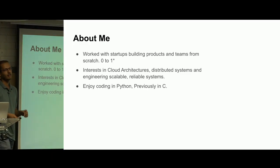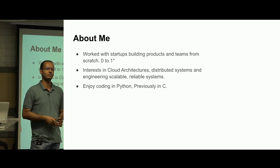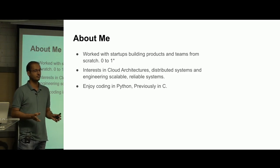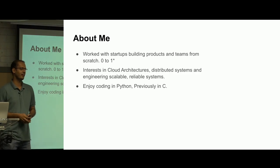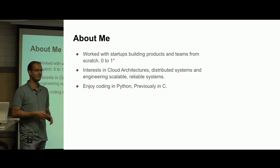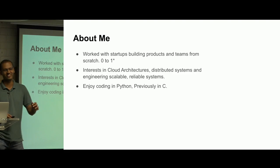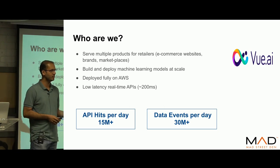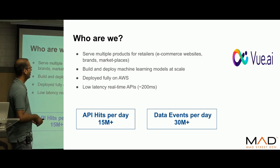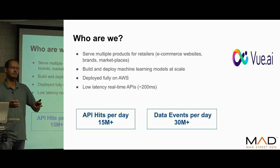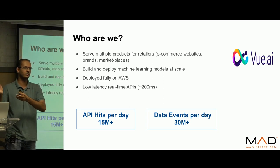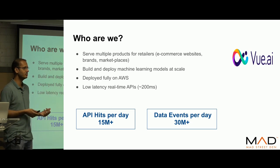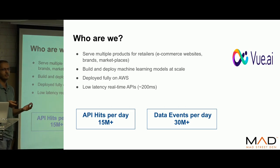Quickly about me: I have primarily worked at startups and built systems from scratch. I am interested in distributed computing and building scalable systems. I enjoy coding in Python, previously in C. The company I work for is Mad Street Den. We have a retail brand called Vue.ai, where we have B2B products — APIs hosted on Amazon Web Services.